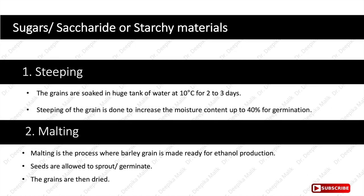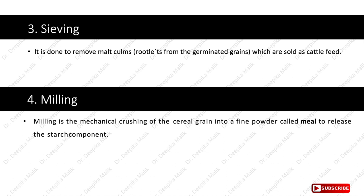The first step for saccharide or starchy materials is steeping, where grains are soaked in a large tank of water at 10 degrees Celsius for 2 to 3 days, increasing moisture content up to 40% for germination. The second step is malting, where barley grain is made ready for production by allowing seeds to sprout and then drying them. Sieving is then done to remove malt culms — the rootlets from germinated grains — which are sold as cattle feed. Milling is the mechanical crushing of cereal grain into a fine powder called meal to release starch components.